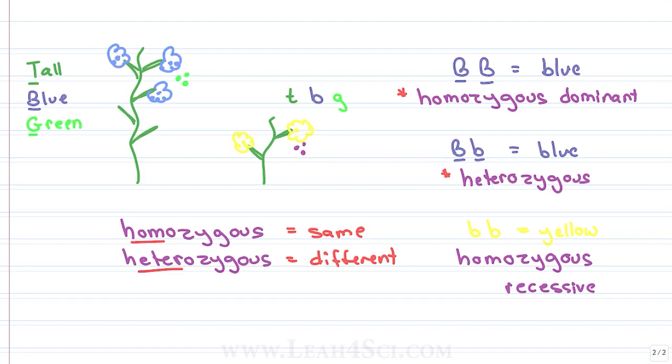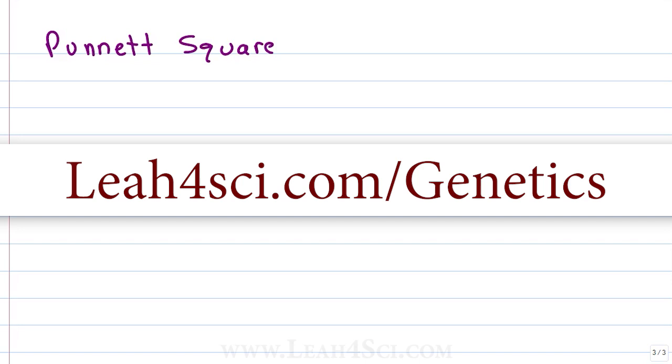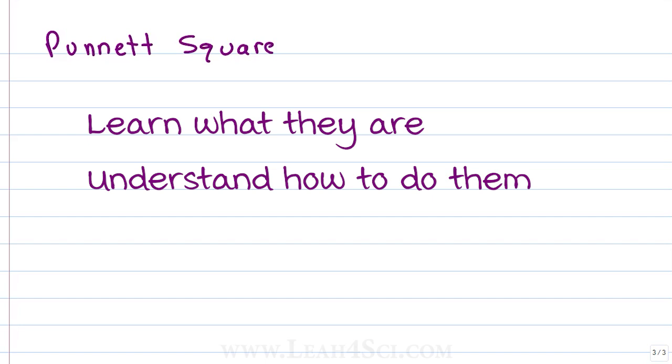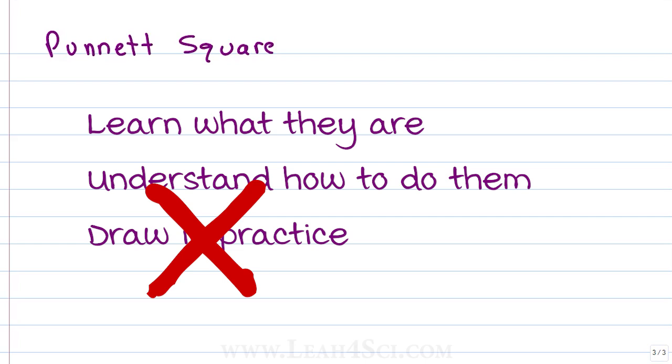We'll learn how to do this with a Punnett square. You can follow along with a Punnett square cheat sheet on my website leah4sci.com/genetics. Now here's the thing about the Punnett square: learn what they are, understand how to do it, draw some in practice, but never draw one on the MCAT. It takes too long and it's a waste of time. So after I teach you how to do the Punnett squares, I'll show you a shortcut for calculating ratios without ever having to draw another one under the pressure and time constraints of your MCAT.